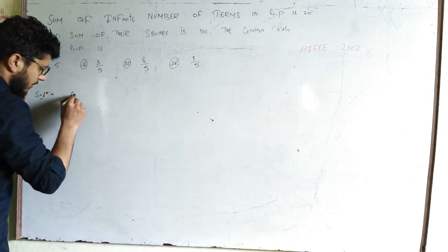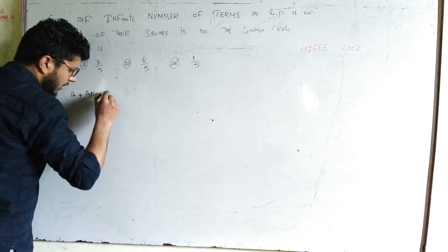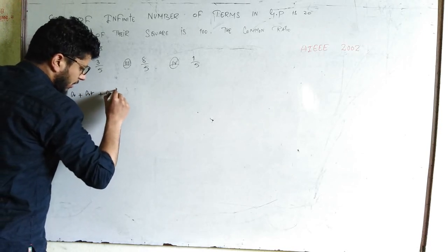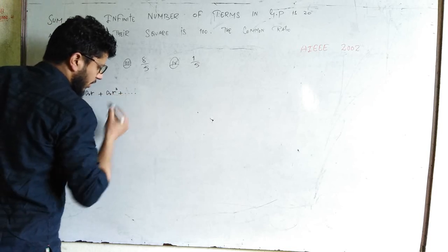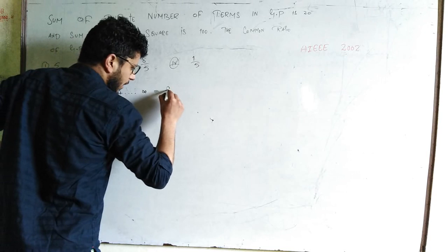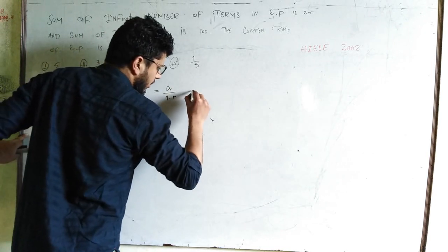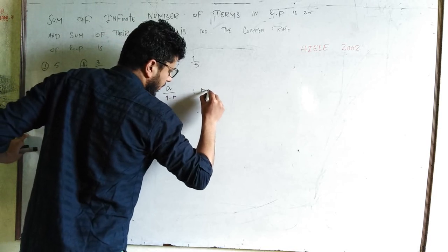The sum of an infinite number of terms: a plus ar plus ar² plus so on up to infinity equals a/(1-r) when |r| is less than 1.